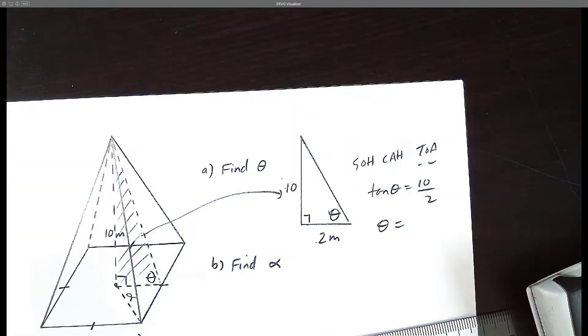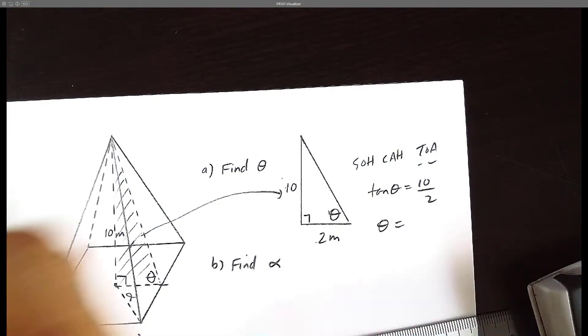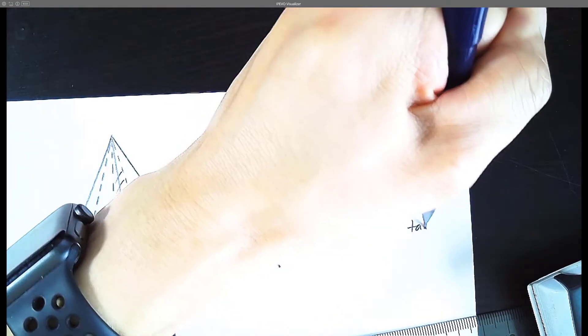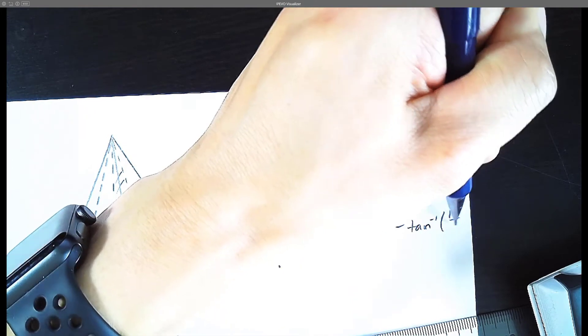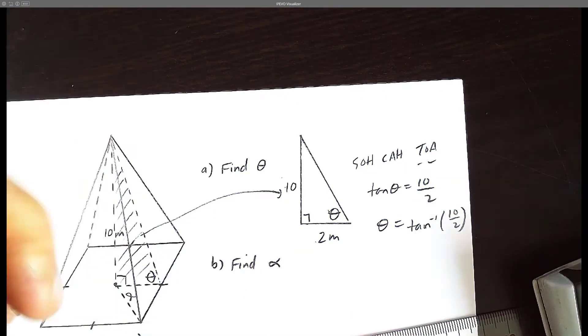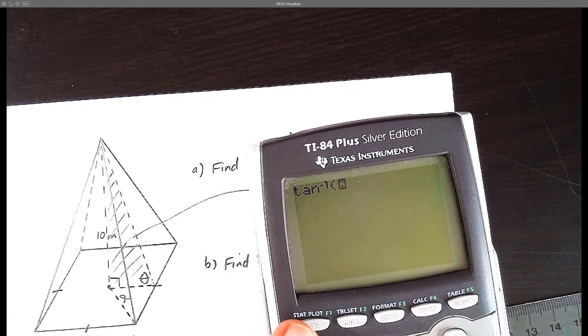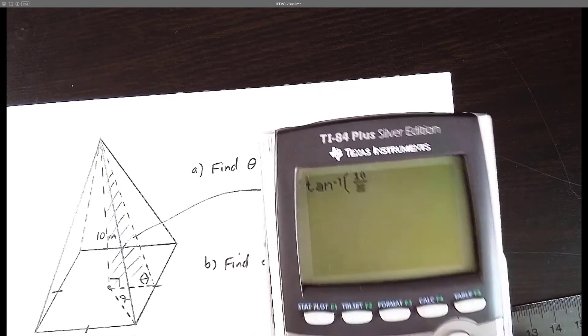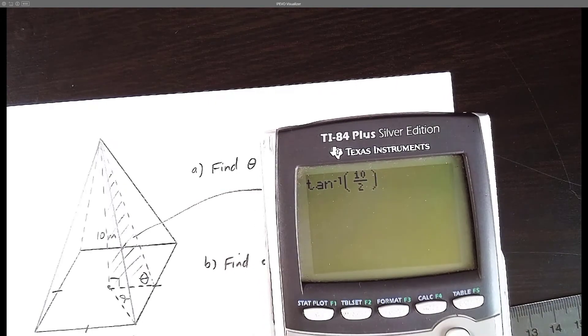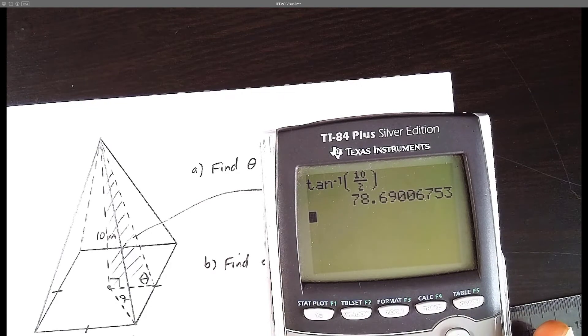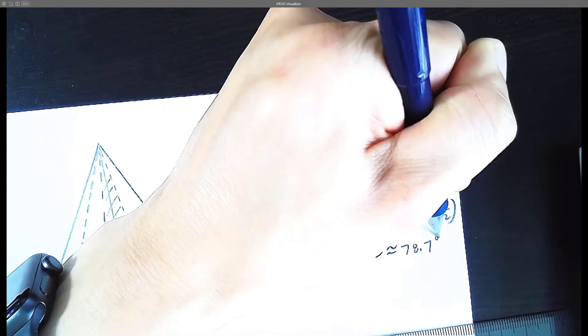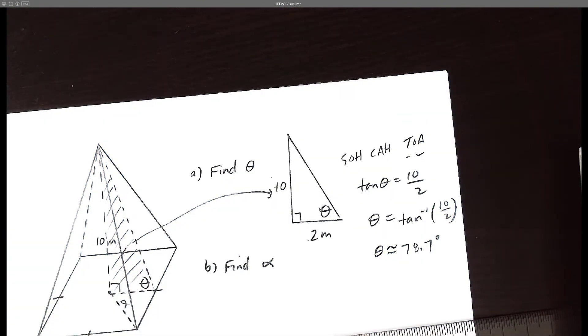To find the golden egg here, theta, the angle, you hit tan inverse. Tan inverse of that fraction or the number. So let's hit the button here. What is tan inverse of 10 over 2? And the answer is around 78.7 degrees. So we're going to say theta is approximately 78.7 degrees. And that's great. We answered part A.